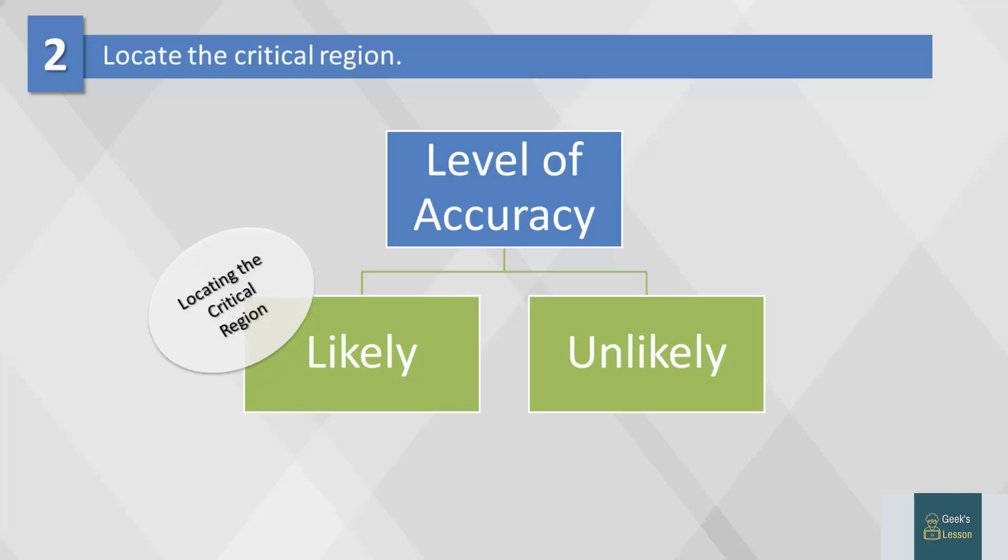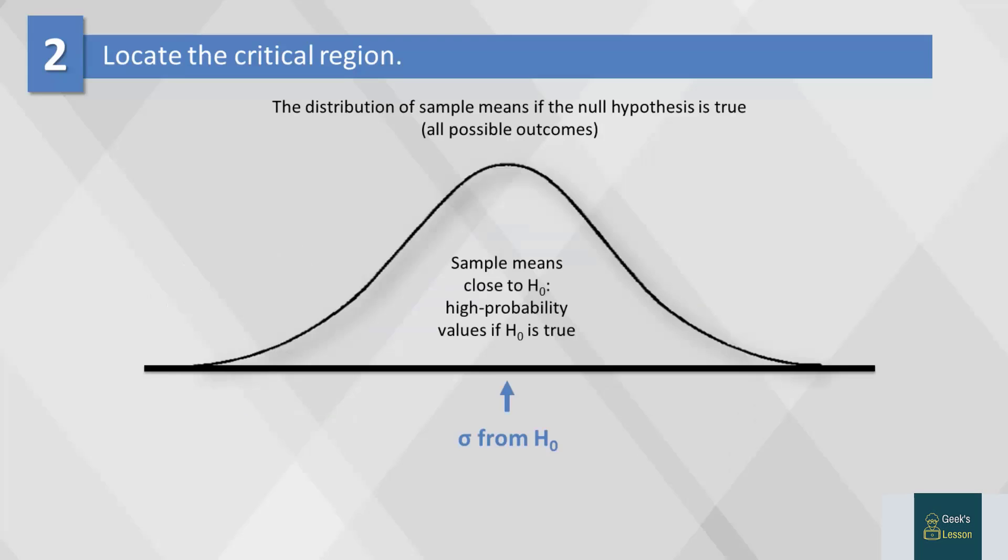The critical region consists of outcomes that are very unlikely to occur if the null hypothesis is true, or in other words, the sample means that are almost impossible to obtain. When we're estimating population parameters using a sample, we have to determine the cutoff values. These cutoff values are called alpha.